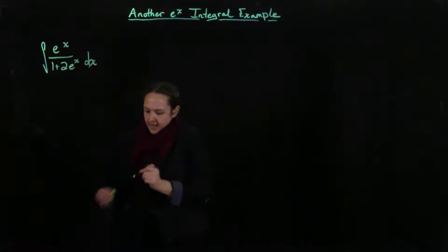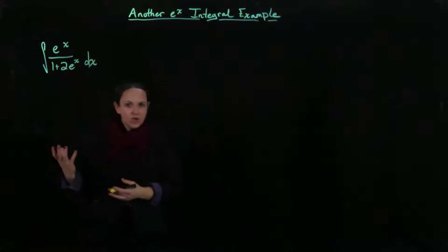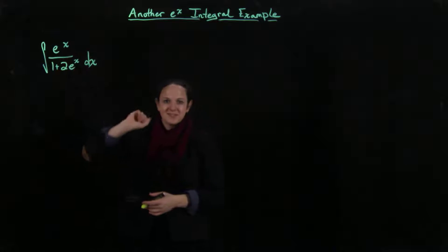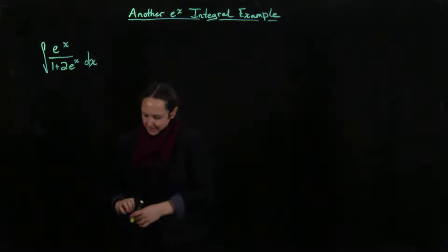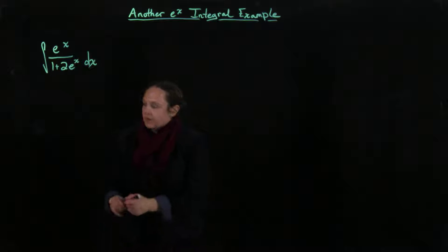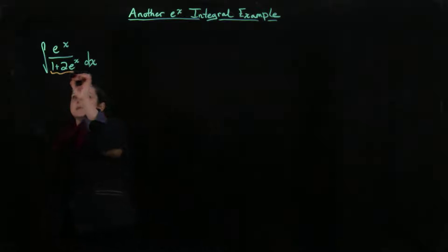This should look like, it might be hard to see this, but this is an example where we have something on the bottom and its derivative or close to its derivative is on the top. So we're going to have the bottom is actually going to be our u.